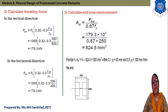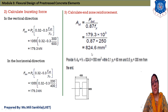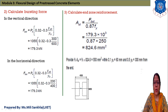We now find the end zone reinforcement. The equation is: Ast = FBST / (0.87 × fy). The bursting force is 179.3 kN, which we convert to Newtons (179,300 N). With fy = 250 N/mm², we get Ast = 179,300 / (0.87 × 250) = 824.6 mm square. This is the required end zone reinforcement for the post-tensioned beam.